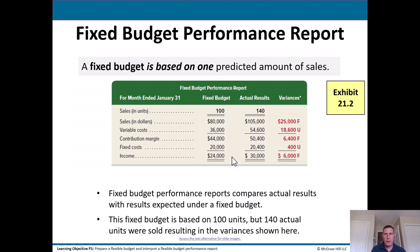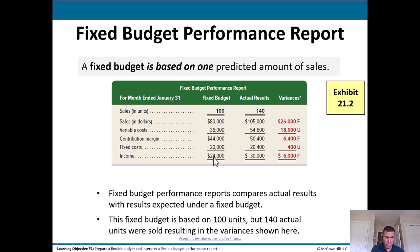Let's take a look at a fixed budget performance report. A fixed budget is based on one predicted amount of sales — just one. The fixed budget here is based on 100 units in sales. If they sell 100 units, they make $80,000 in revenue. Variable cost is $36,000, contribution margin $44,000, fixed cost $20,000, so they would presumably generate income of $24,000. Remember, this is just a guess — this is a budget.